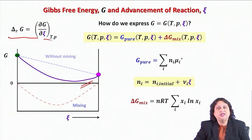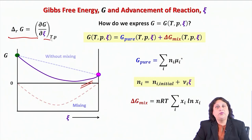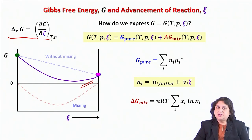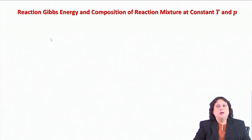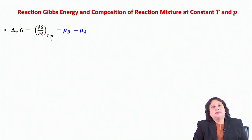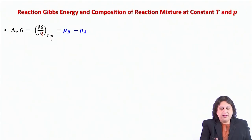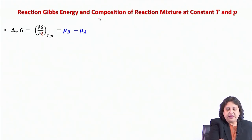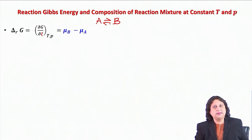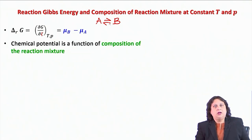Let us put all the components of our discussion together. We have defined ΔRG — the reaction Gibbs energy — as (∂G/∂ψ) at constant T and P. For a simple reaction A ⇌ B, this is nothing but μB minus μA.